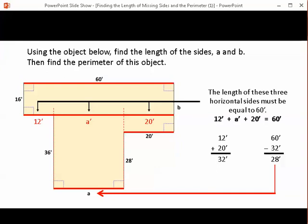Now if you want to check this answer, all you have to do is add the three lower horizontal pieces together. That's 12 plus 28 plus 20, and that will give you 60 feet.